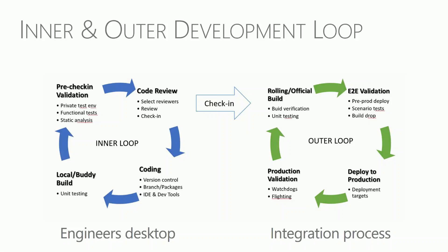Whenever you want to check in your code, you need a code review — at least two people have to review your code changes, provide feedback, and sign off. Without a code review sign-off you're not allowed to check in, and if you do without one and mess something up, you're in deep trouble. Code reviews are gates — they're the last step in the inner loop. Once a code review is signed off, people start checking in their code, and it becomes part of the outer loop — the integration process — where everything is out of the engineer's control.